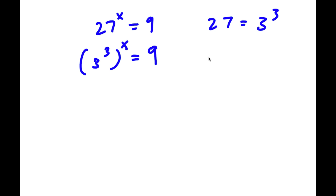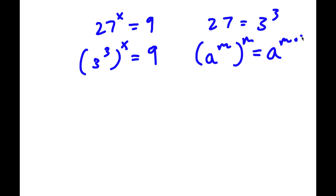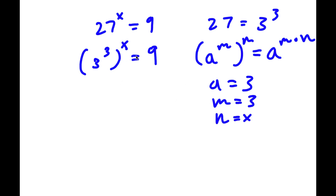If I have something in the form a to the power of m to the power of n, this is actually equal to a to the power of m times n. So for 3 to the power of 3 to the power of x, we can think of a as 3, m as 3, and n as x. This gives us 3 to the power of 3 times x, and 3 times x is simply 3x. So I have 3 to the power of 3x is equal to 9.